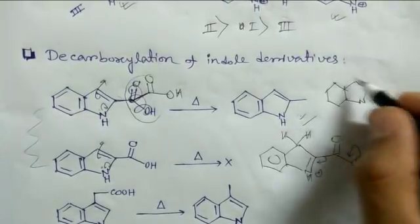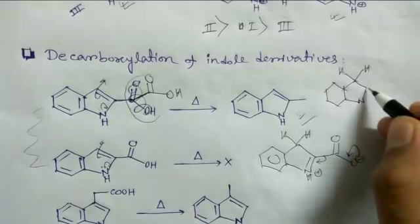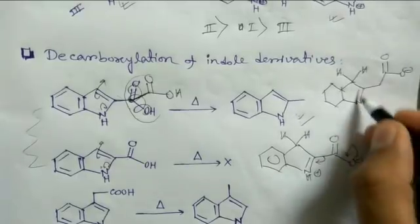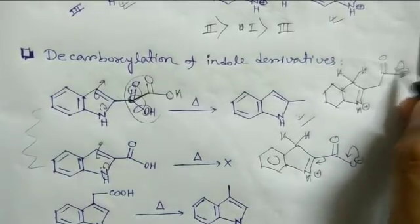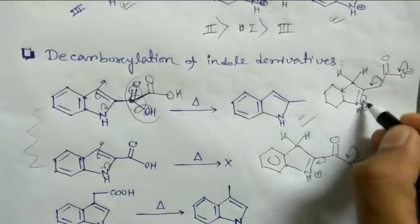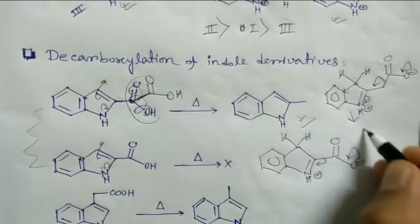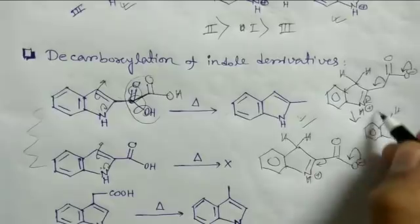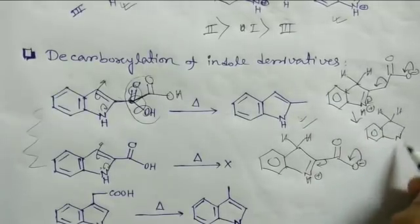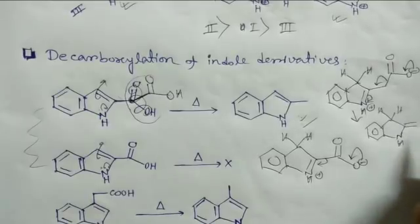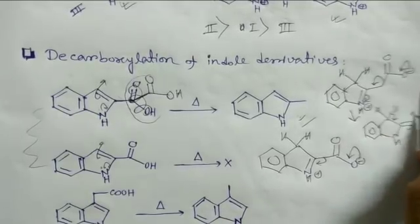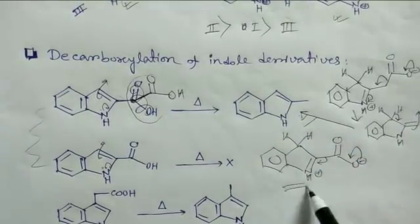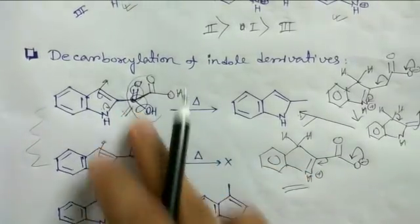In the CH₂-linked compound, after protonation the nitrogen lone pair can push electrons through the system: the COO⁻ expels CO₂, the iminium assists electron flow, and the double bond migrates. A proton is then taken up to give the aromatized product. This mechanism is not possible for the directly C2-attached carboxylic acid, which is why only the CH₂-linked compound undergoes decarboxylation.